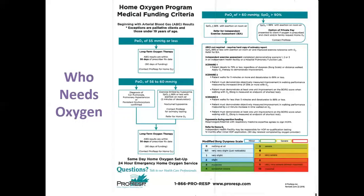If a respiratory therapist assesses you and your oxygen levels fall in the normal range, there typically isn't a lot of benefit to having oxygen and we need to explore other avenues. Sometimes people say they have a hard time climbing stairs and we assess their oxygen levels, but sometimes they're perfectly normal — sometimes it's an issue of conditioning, sometimes heart conditions cause shortness of breath. Our bodies are very complicated systems, but the bottom line is: who needs oxygen? People with low oxygen levels. That's the short answer.